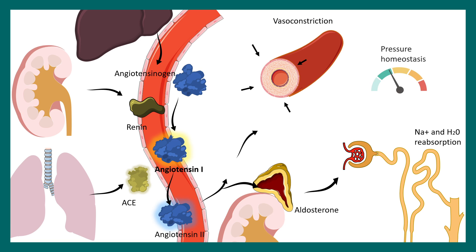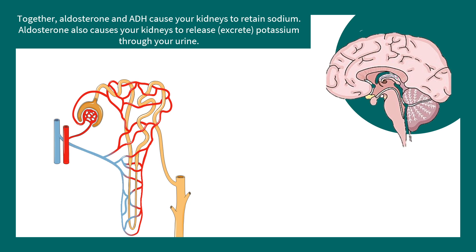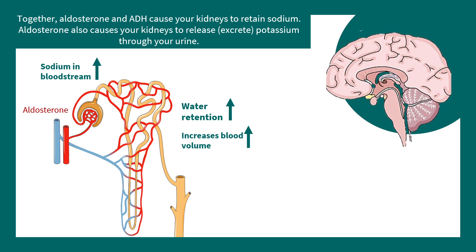All these things increase blood pressure and try to bring back pressure homeostasis. Aldosterone increases sodium in the bloodstream, which is why water is also retained. There is an overall increase in blood volume, which can restore the decreased pressure.